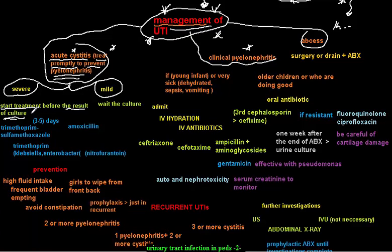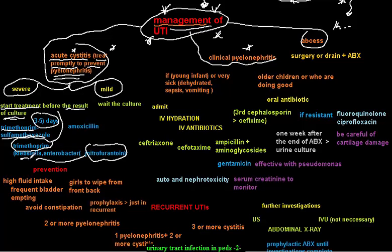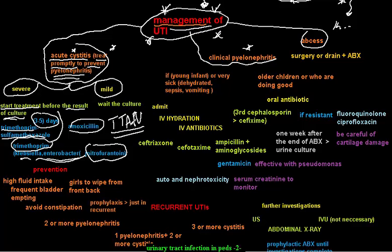The drugs used in treatment of acute cystitis include trimethoprim-sulfamethoxazole for three to five days, trimethoprim alone, nitrofurantoin — which is specifically important for Klebsiella or Enterobacter — and amoxicillin. In mild conditions we can wait for the culture result and then decide which antibiotic to give.